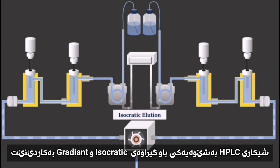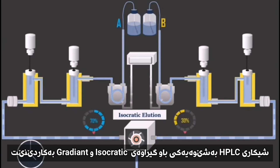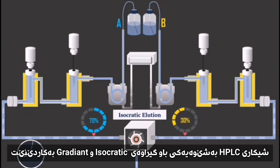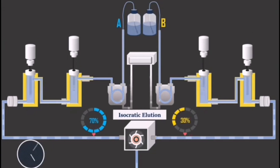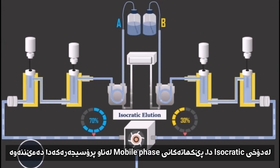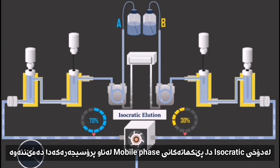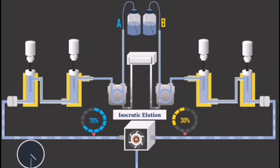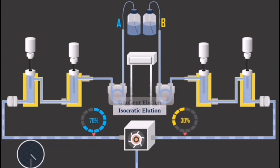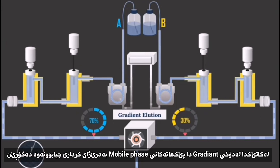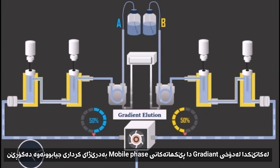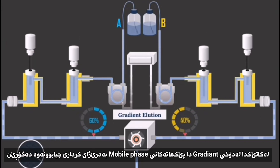HPLC analysis commonly uses isocratic or gradient elution. In isocratic mode, the mobile phase composition remains constant throughout the procedure. Whereas in gradient mode, the mobile phase composition is changed during the separation process.